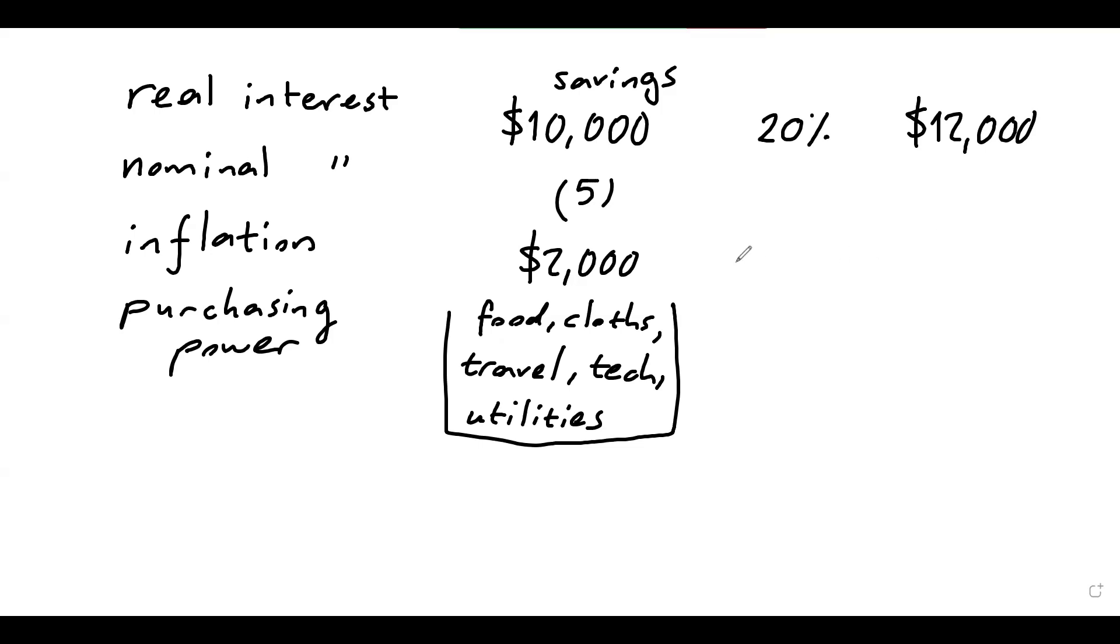Now, if the price of the consumption basket stays the same, your purchasing power has increased, right? Because at $12,000, you can now afford actually six of these baskets. At the moment, you could afford five, but next year, if the prices stay the same, you can get six. So your purchasing power has actually increased.